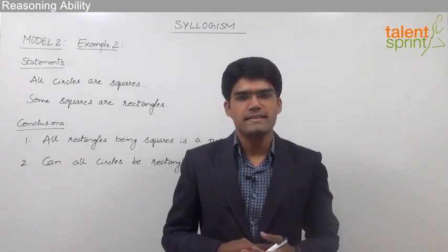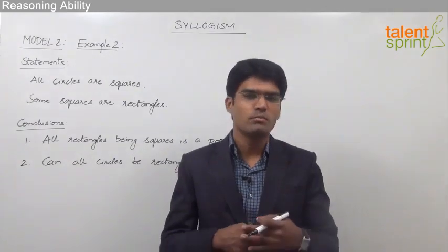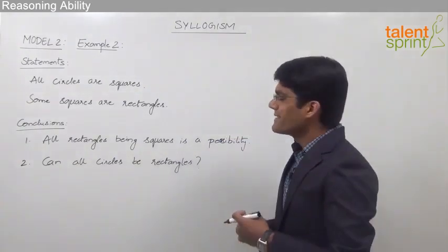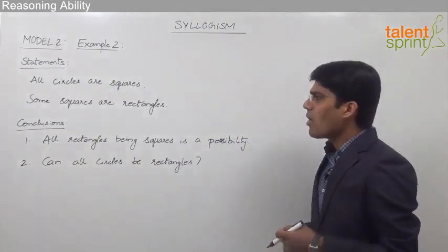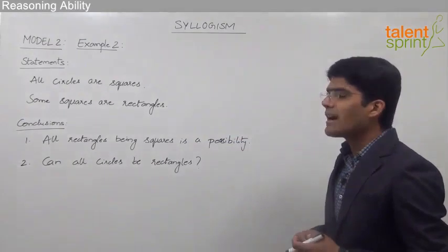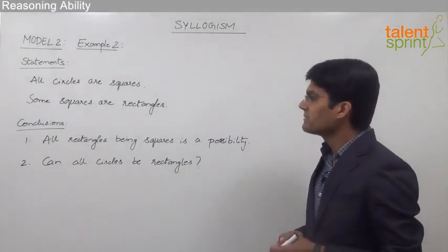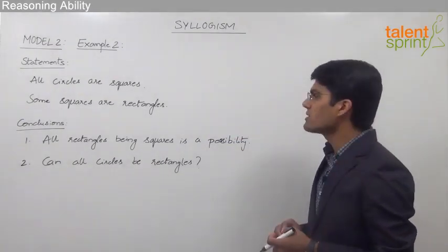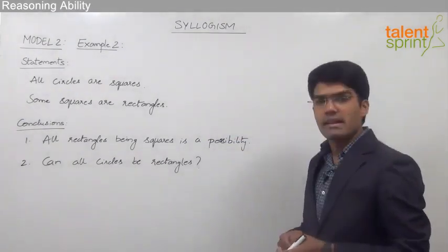Let us now take another example based on possibilities. The given statements are: all circles are squares, and the second statement is some squares are rectangles.